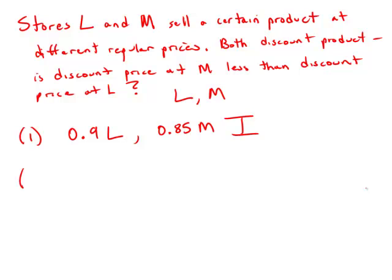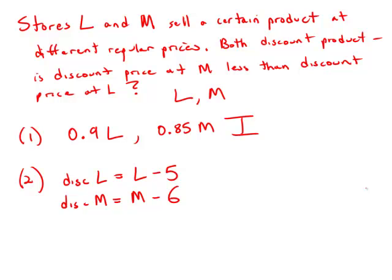Statement 2 tells us: at store L, the discounted price is $5 less than the regular price, so the discounted L is the regular L minus $5. And the discounted M is $6 less than the regular price at M, so that's M minus 6. But again, because we have no idea the relative size of L or the relative size of M, by itself this is insufficient.